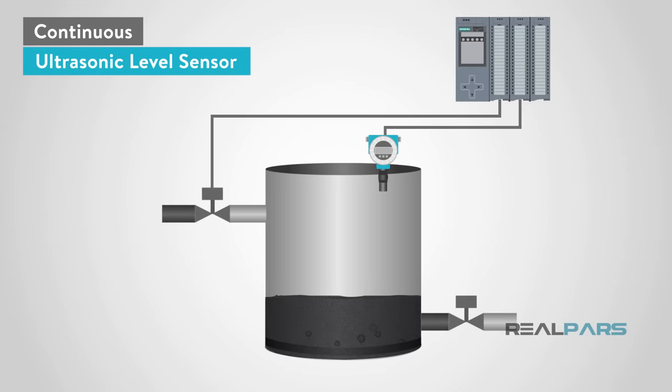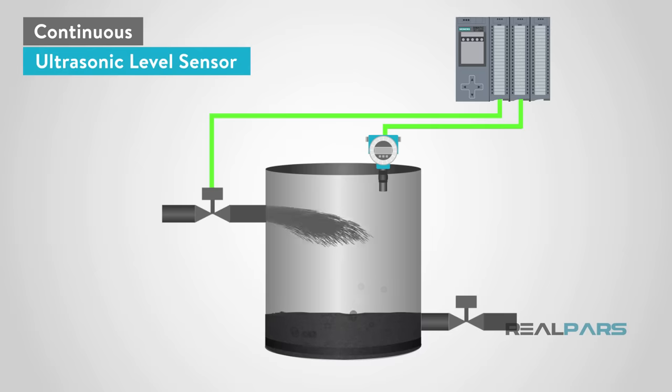An example application is a hot asphalt tank in a shingle manufacturing plant. The ultrasonic sensor would be placed in the top of the tank, away from the hot asphalt, and used to sense the level in order to send a fill request for the tank.